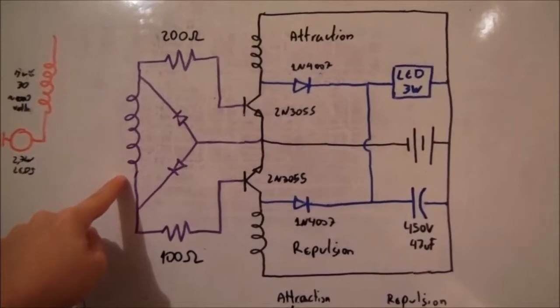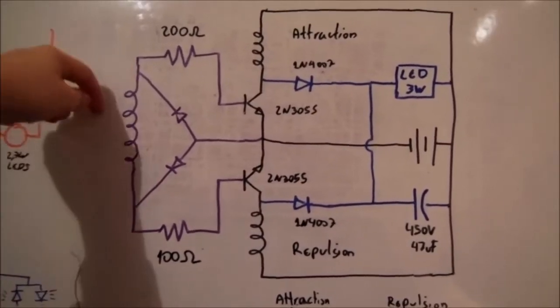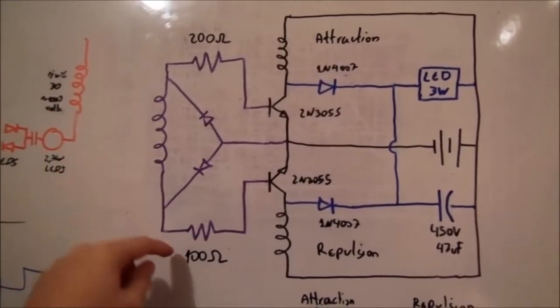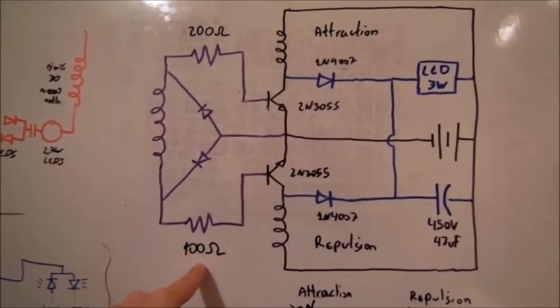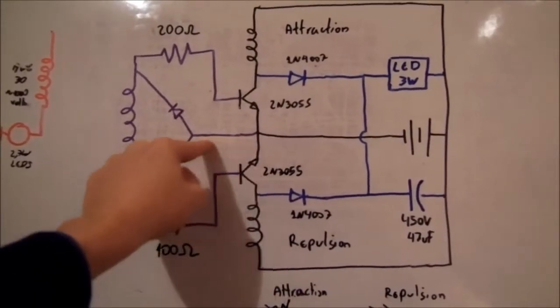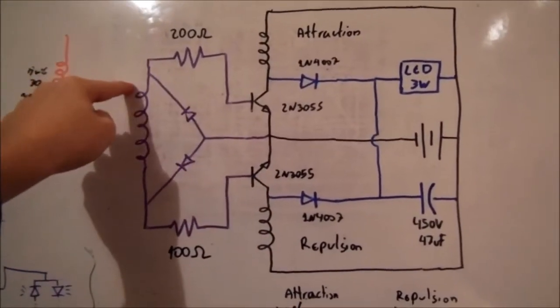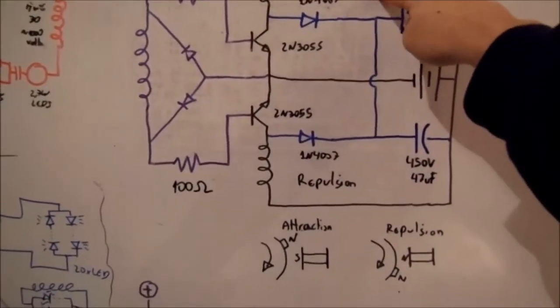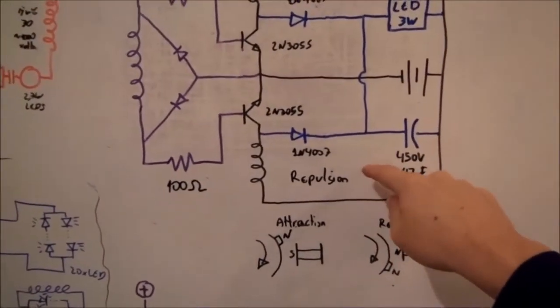And when the magnet is leaving the coil, the current is in this direction, passes through this 100 ohms resistor, opens the transistor in the lower part and goes back to the trigger coil. So, the upper part works in the attraction mode and the lower part works in repulsion mode.